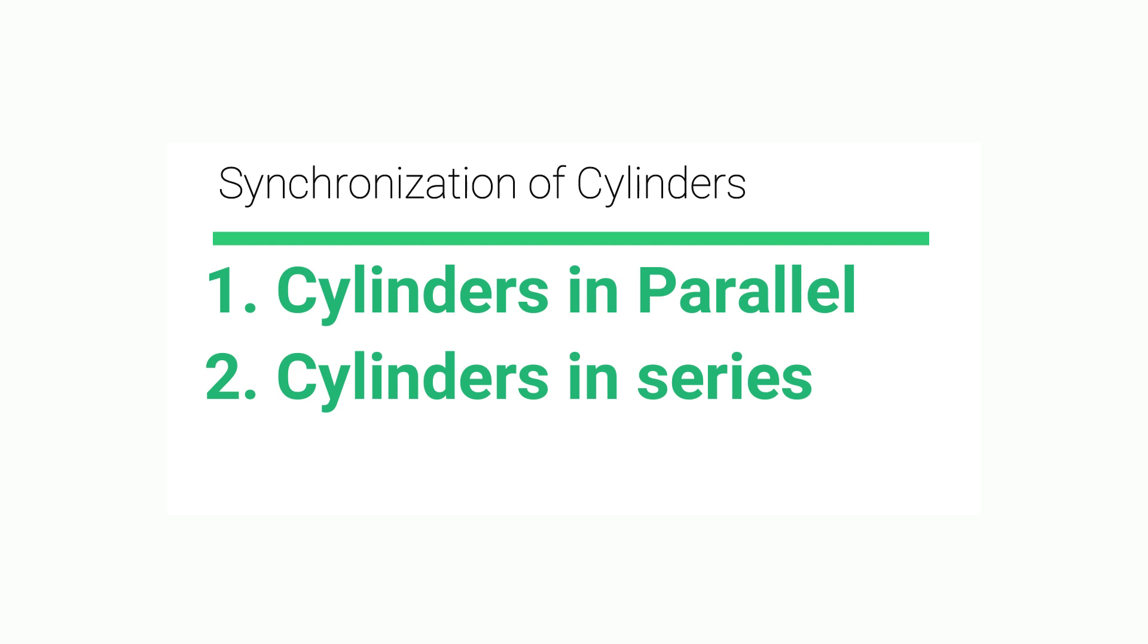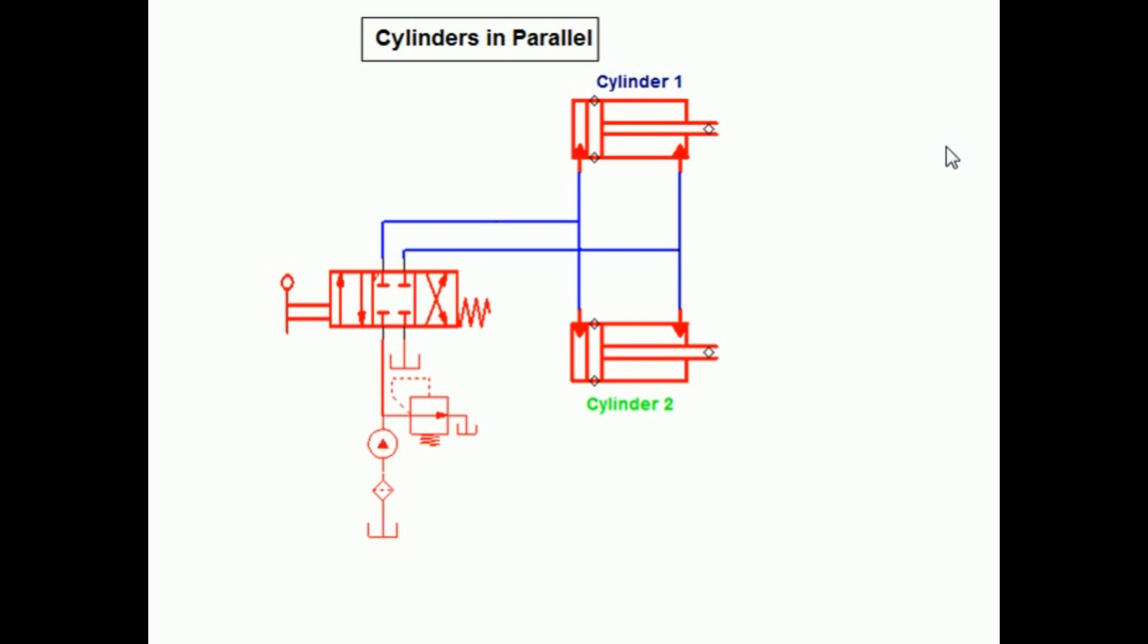Figure shows a hydraulic circuit in which two cylinders are arranged in parallel, that is cylinder 1 and cylinder 2. When the two cylinders are identical, the loads on the cylinders are identical, and then extension and retraction are synchronized. If the loads are not identical, then the cylinder with smaller load extends first.